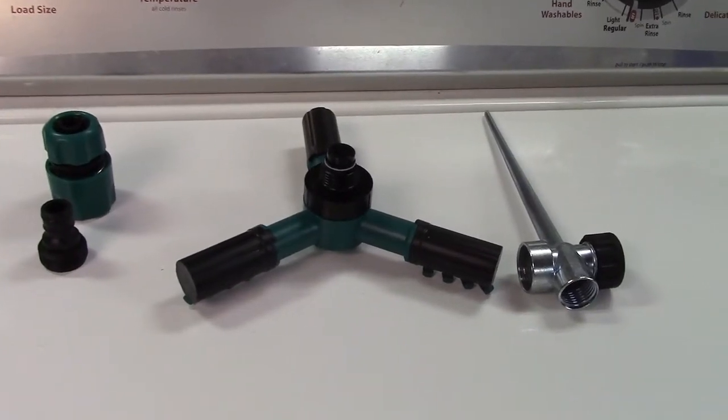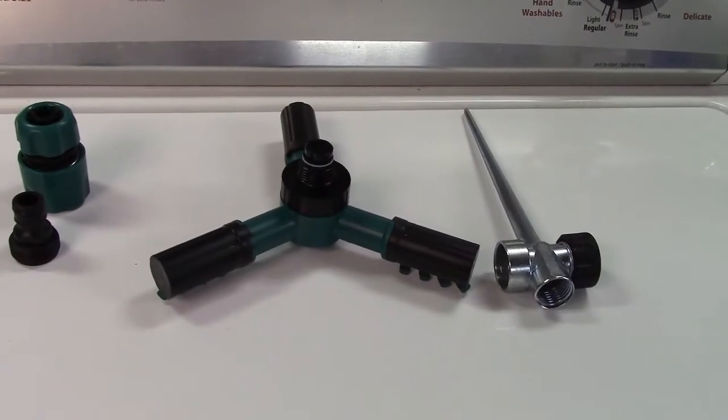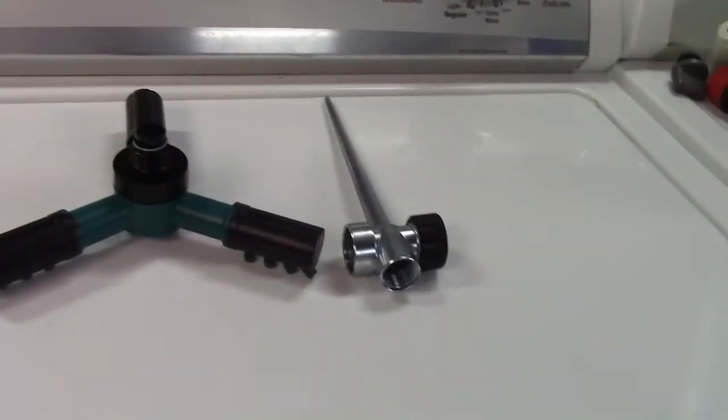This is the TreatLife 3-arm lawn sprinkler. It spins 360 degrees. It has an adjustable arc and comes with a metal stake.